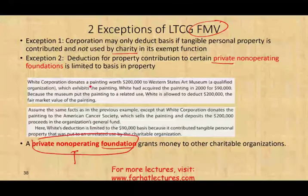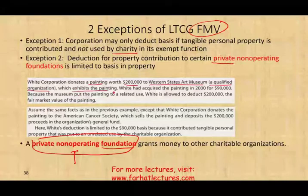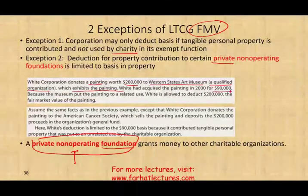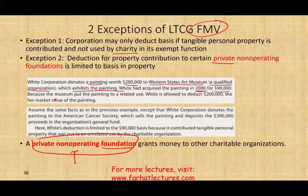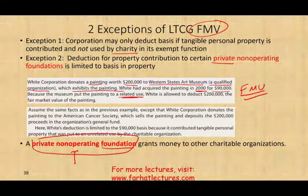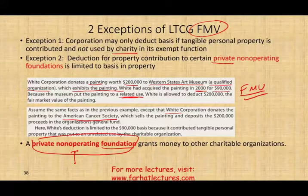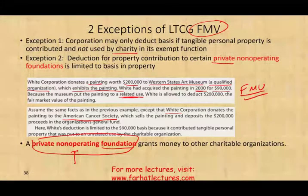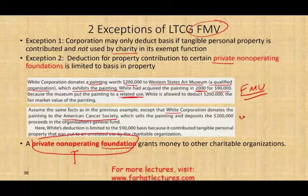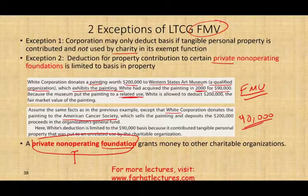Example: White Corporation donated a painting worth $200,000 to Western State Art Museum, which exhibited the painting. White acquired it for $90,000 in year 2000. Because the museum put the painting to a related use, White can deduct the full fair market value of $200,000. However, if White donated the painting to the American Cancer Society instead, the Cancer Society would sell the painting for cash — it's not a related use — so White Corporation can only deduct the basis of $90,000.